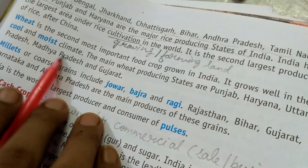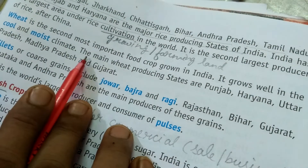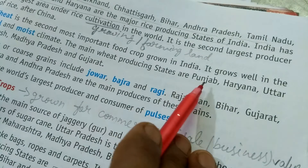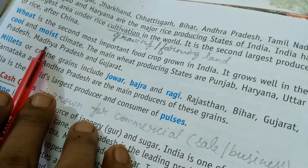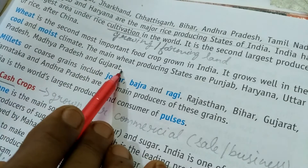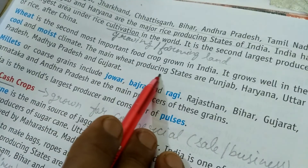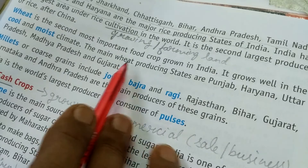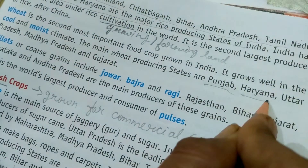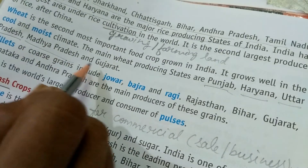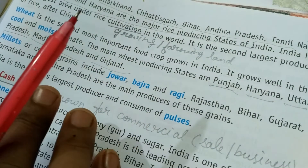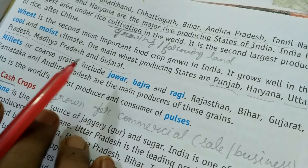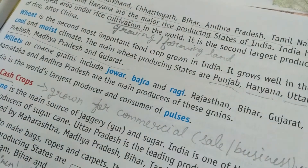Wheat requires a cool and moist climate for good growth — where the temperature is low and the atmosphere has proper humidity. The main wheat-producing states are Punjab, Haryana, Uttar Pradesh, Madhya Pradesh, and Gujarat. These state names are important to know — you must learn which state is mainly producing which type of food crop. After studying food crops, we will also learn the states producing cash crops.